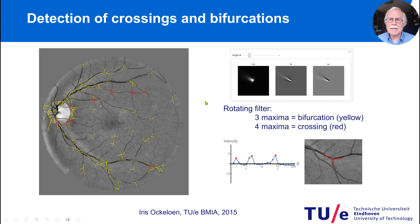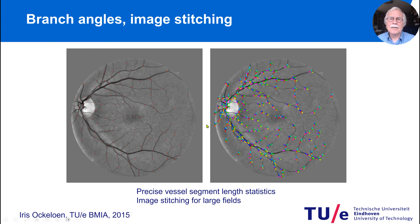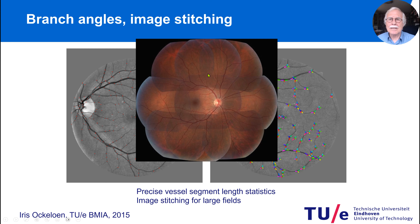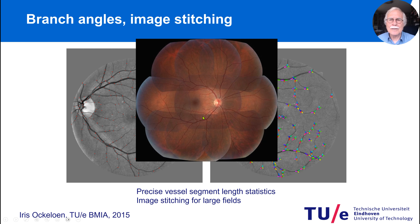Detecting crossings and bifurcations was actually relatively easy. At every pixel we looked at a rotating filter: if the filter was on a bifurcation, we got three peaks; if on a crossing, we got four peaks. That was a nice way to measure all these bifurcations and crossings. If you have all of them, you can use them as landmarks or key points in the image. This means if you want a large area, you need images where the patient looks left, right, up and down, and then you can stitch these images — with nine images you can have a much larger view. The perspective transformations to combine these images could be easily done from this large set of landmarks.